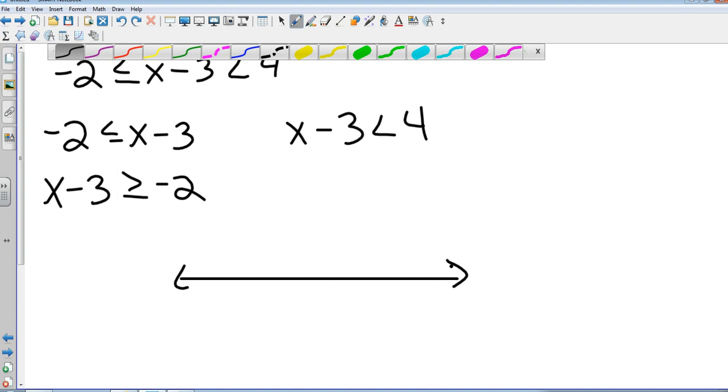All right, Hunter, solve this one. What do we do? Got it? What do you come up with? Okay, x is greater than or equal to one. Don't put it on a number line yet. Let's determine how big we need to make our number line first, so let's solve the second one. Jake, let's go on the second one. Add three to both sides. So x is less than seven.